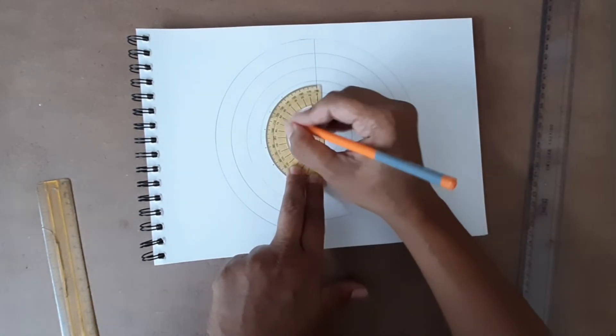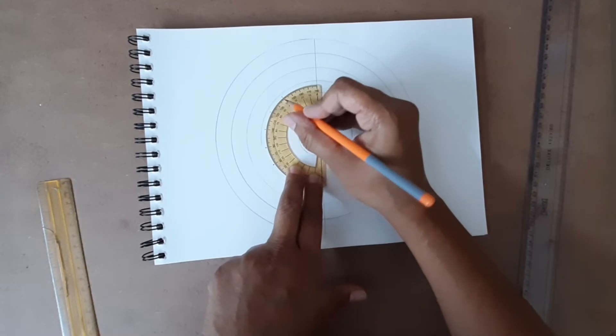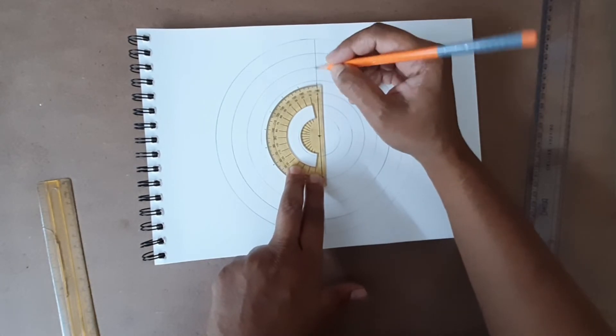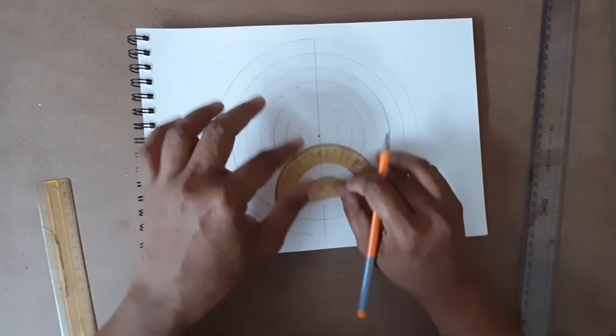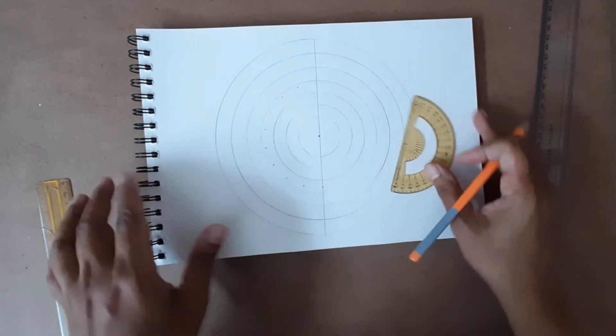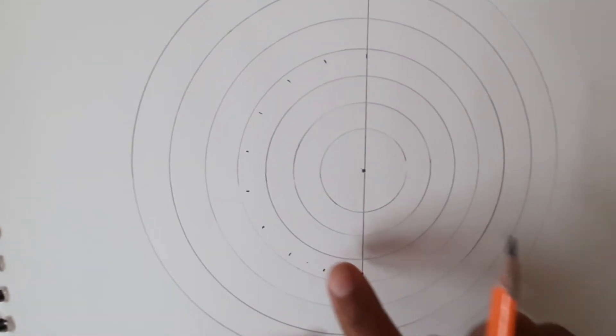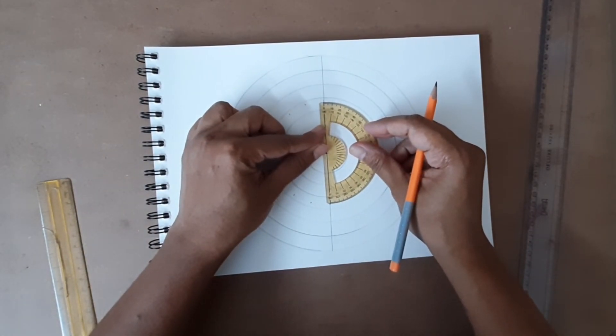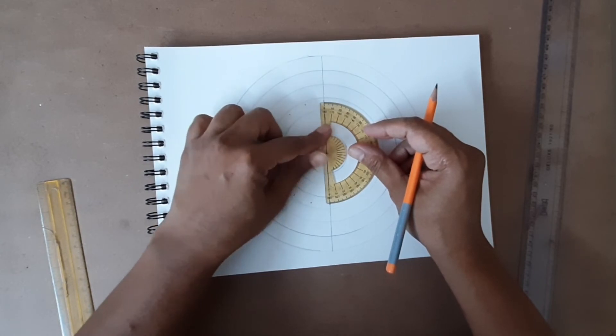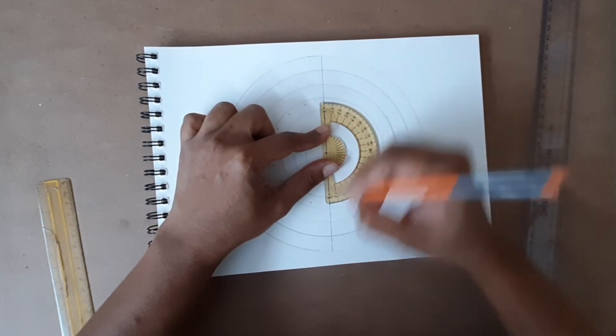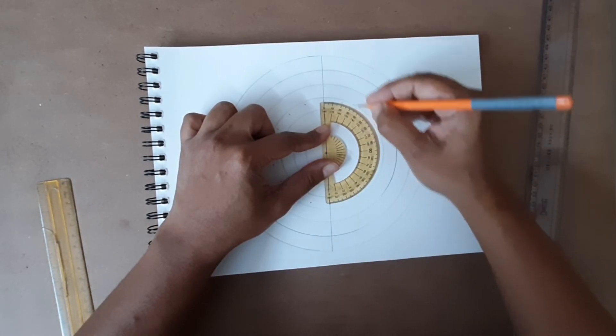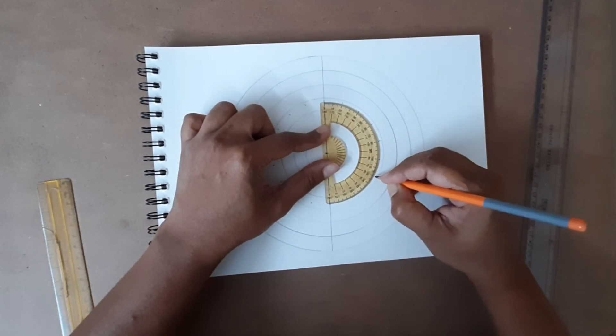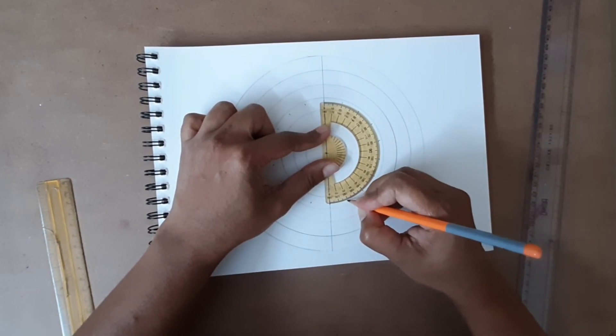If you really want, you can even try every 10 degrees. But for now we are focusing only on making a simple mandala, so I've taken 20 degrees. Now on one side the marking is done, so I'm moving to the other side. Again, zero is already marked, 180 is also marked. So 20, 40, 60, 80, 100, 120, 140, 160.